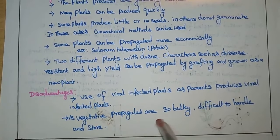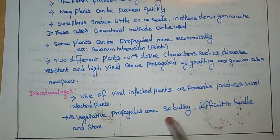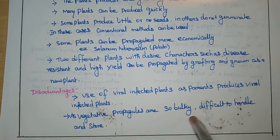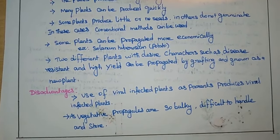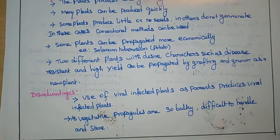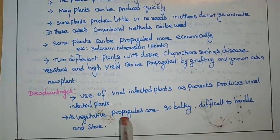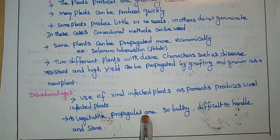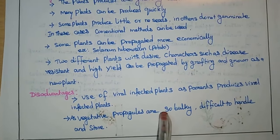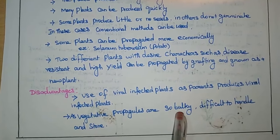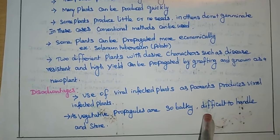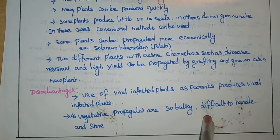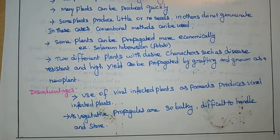Vegetative propagules such as rhizomes are so bulky that they are very difficult to handle and store.